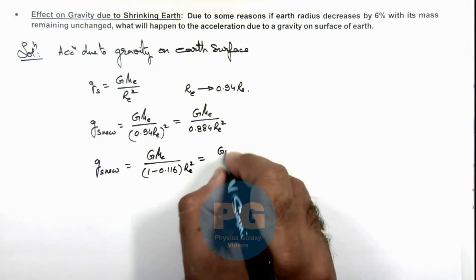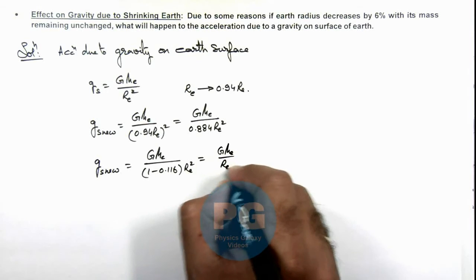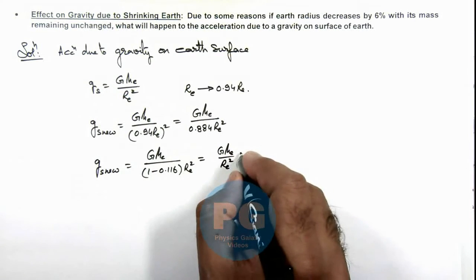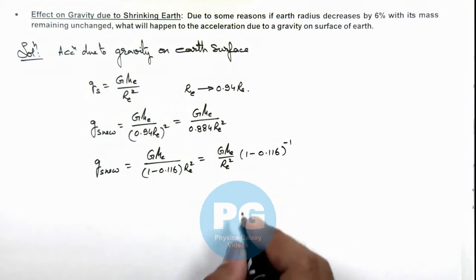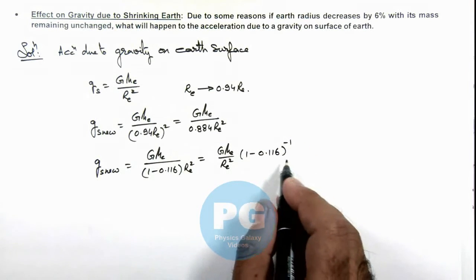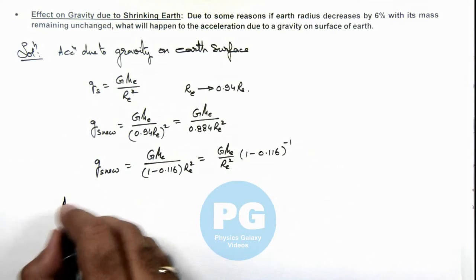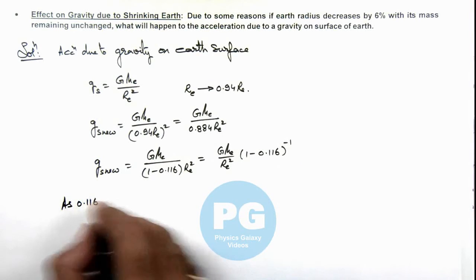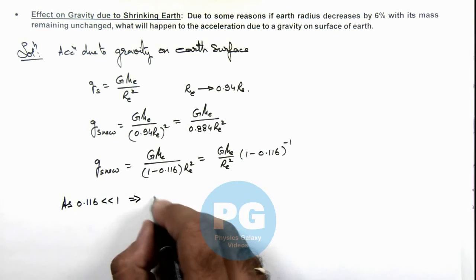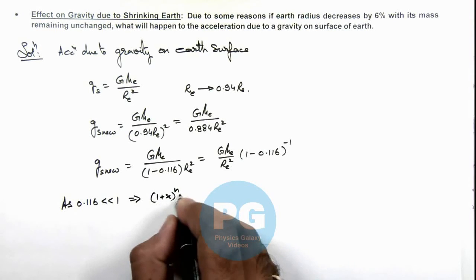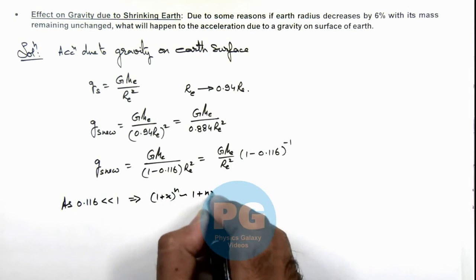This can be written as (GM_e/r_e²), which we'll replace by g_s, times (1 - 0.116)^(-1). Here we can use the binomial approximation as 0.116 is very small compared to 1. This implies we can use the relation (1+x)^n ≈ 1 + nx.